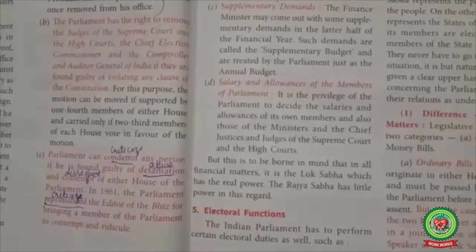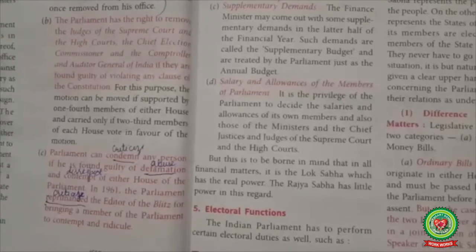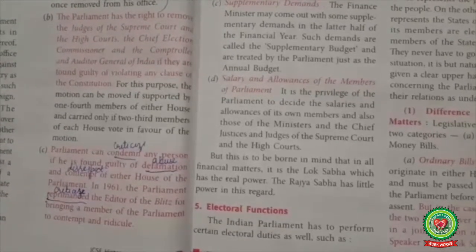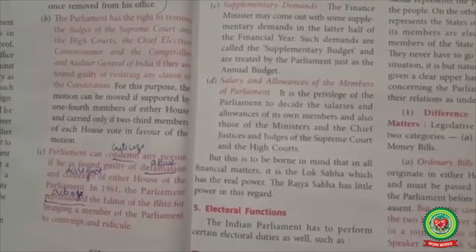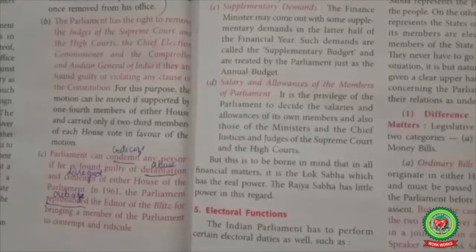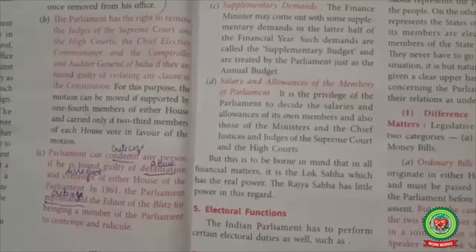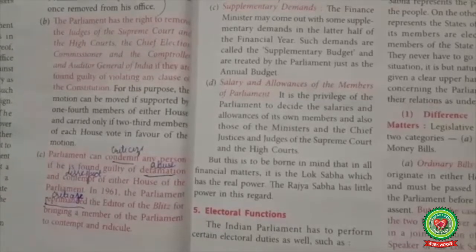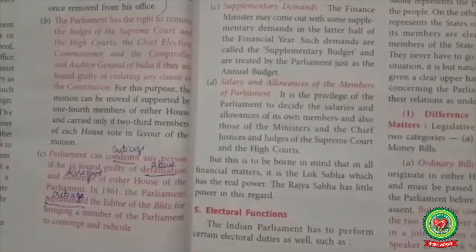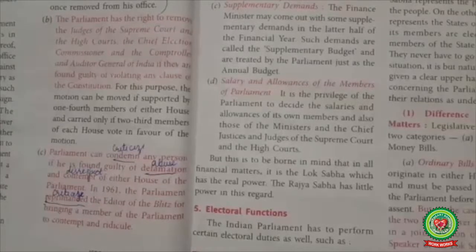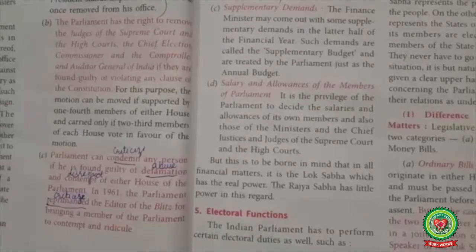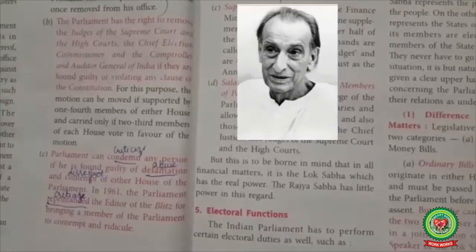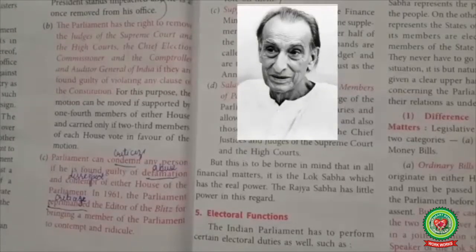In 1961, the Parliament reprimanded (means criticized) the editor of Blitz for bringing a member of Parliament into contempt and ridicule. If any member is found abusing or in violation of either house of Parliament, Parliament can criticize that person. In 1961, Blitz editor R. K. Karanjia was summoned to the bar of the House and criticized. His weekly news magazine was held guilty of disrespect for captioning a photograph of Lok Sabha member J. B. Kriplani as 'Kripaluni.'